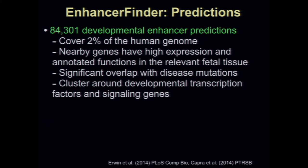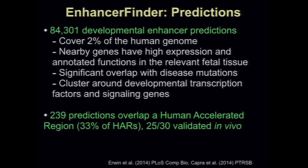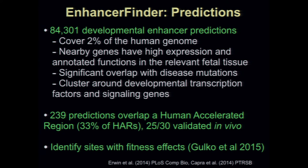We made predictions across the human genome — for all of development, any tissue — about 84,000 predictions. They had many bioinformatic features of enhancers. We predicted conservatively that about a third of human accelerated regions were active during development. Of the mouse experiments we did ourselves, 25 out of 30 tested at embryonic day 11.5 were active enhancers in vivo. Work from Adam Siepel's lab looking at fitness effects — the FITCON scores — showed we were doing almost as well as their method at predicting sites with fitness effects, which I found interesting.